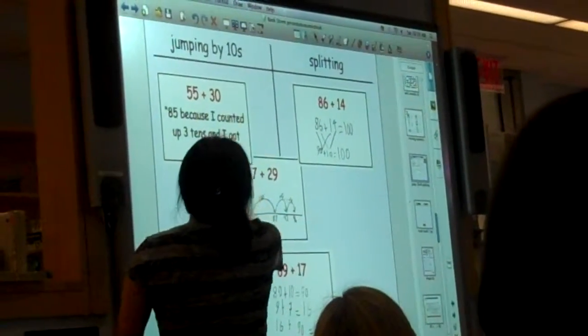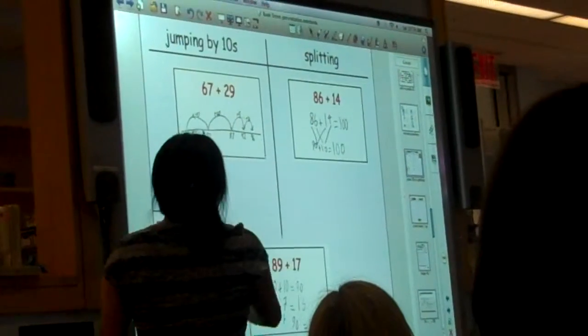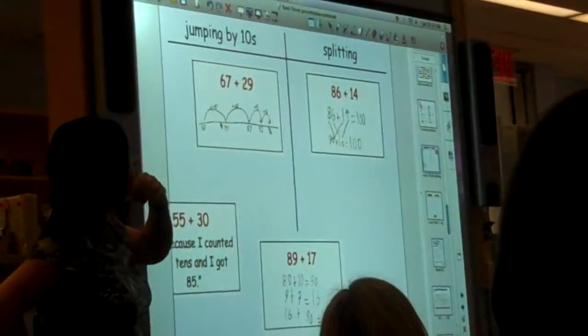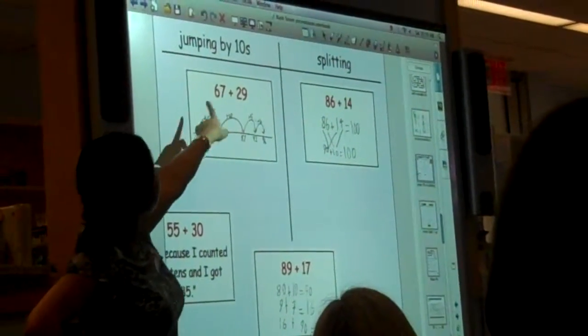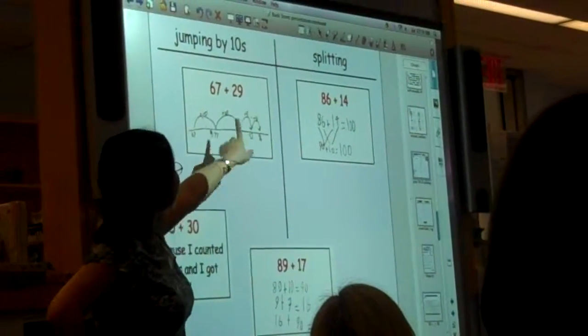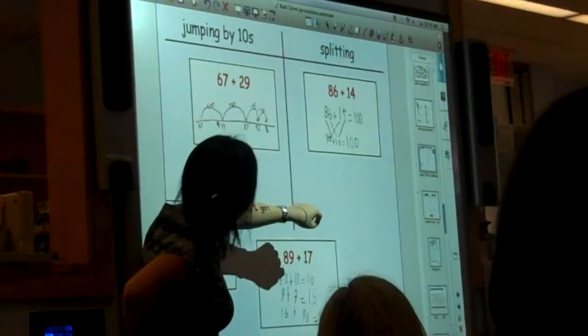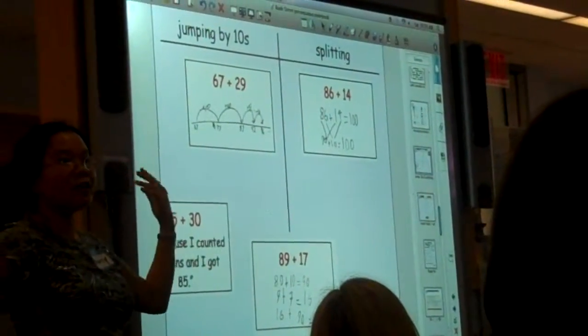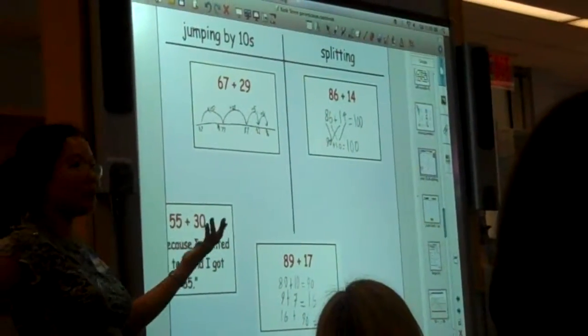And then, let's see if you look at this one. I'll move this down so you guys can see. If you look at this one, sixty-seven plus twenty-nine. This kid did sixty-seven plus ten. Seventy-seven plus ten. Eighty-seven plus five. And plus four. Okay, so then what strategy is that? Are you splitting it or are you jumping by tens?